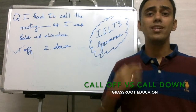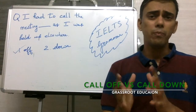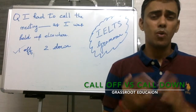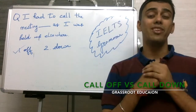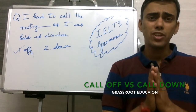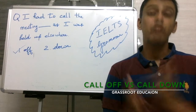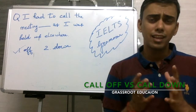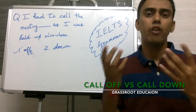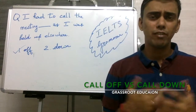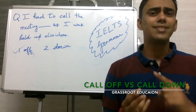Now, what do we do with the second choice? 'Call down' has two usages. The first is expecting some divine intervention from above, from God. For example: 'I called down for help from the heavens as I was in a very difficult situation,' which means I wanted some divine intervention.